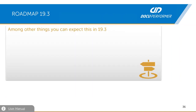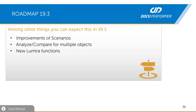Let's look to the future. I'd like to give you some details about the features planned for 19.3. We plan to improve the scenarios — the UI, logic, and entire behavior. We also want to make it possible to analyze and compare multiple entities in one workspace. We want to add new Lumira functions, for example adding Lumira into other BW functions like the where-used analysis, so that when you analyze a query it's also possible to check if a query is used in a Lumira report.